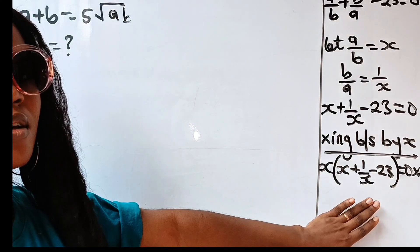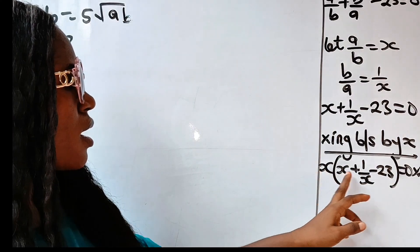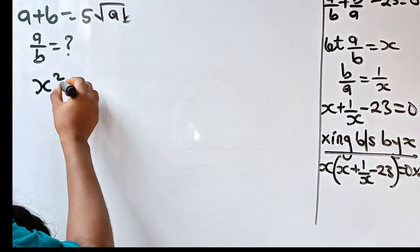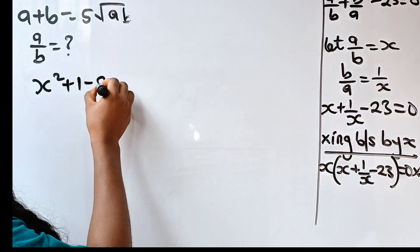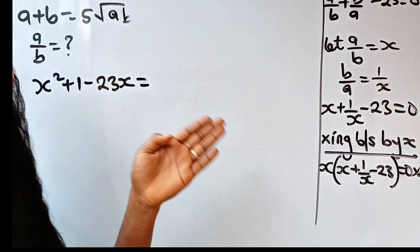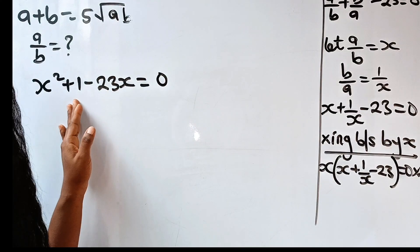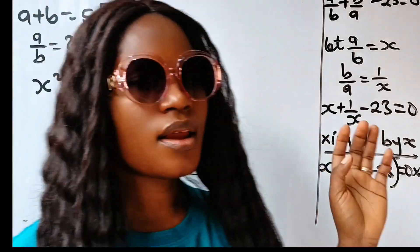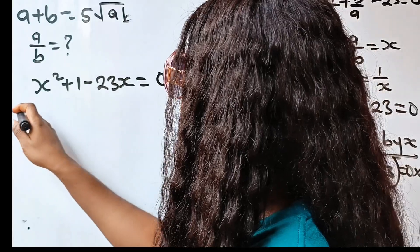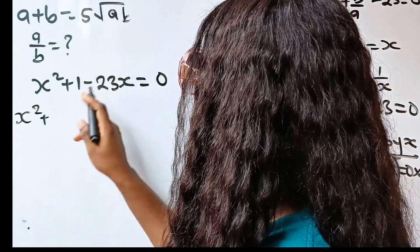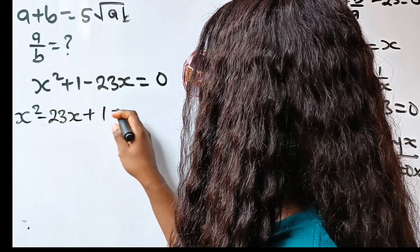X times X gives us X squared. X times 1 over X gives us plus 1. X times minus 23 gives us minus 23X. This equals 0. Notice that we have a quadratic equation. Arranging it properly, we write X squared minus 23X plus 1 is equal to 0.